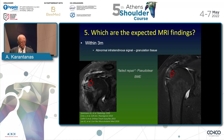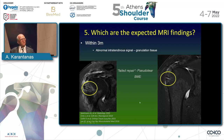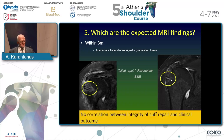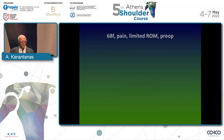We radiologists need to be familiar with pseudo tears. In addition, bone marrow edema surrounding an anchor is a normal finding — it's not an inflammatory process suggesting failure. A few months later the bone marrow edema disappears. According to literature data, no correlation exists between integrity of the cuff repair and the clinical outcome in the long run, so we need to know this clinical information.